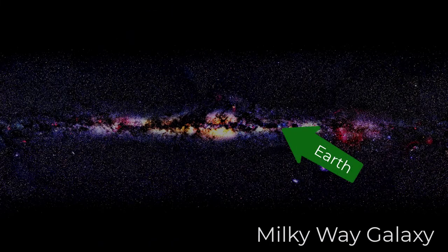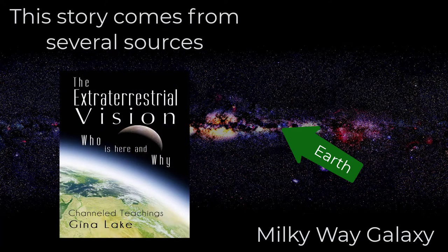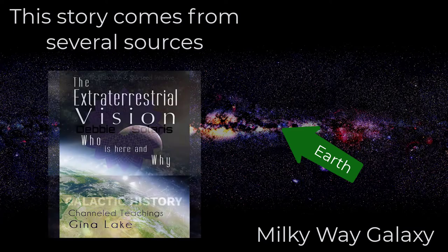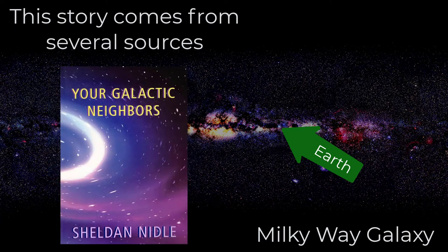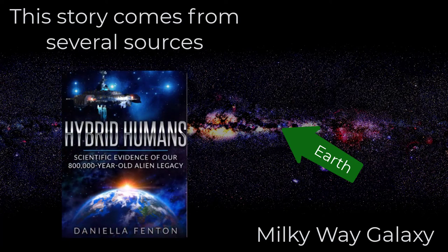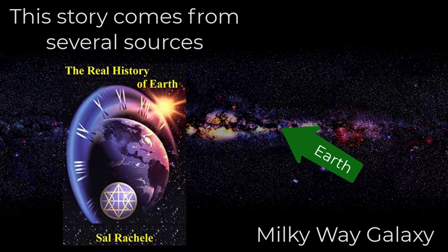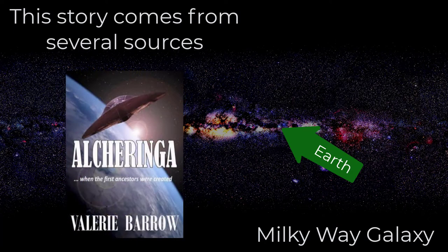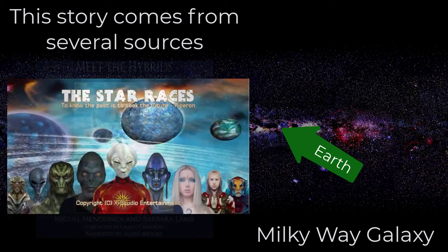This story comes from several sources: The Prism of Lyra, Extraterrestrial Vision — Who Is Here and Why, Galactic History, Your Galactic Neighbours, Hybrid Humans, The Real History of Earth, Al Charinga, Meet the Hybrids, and The Star Races.